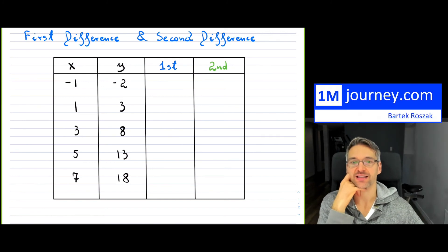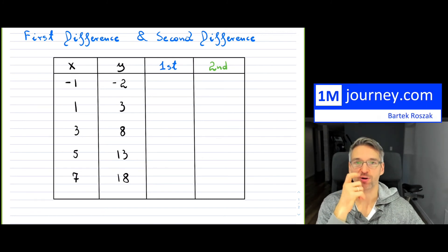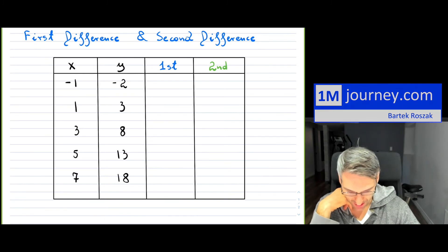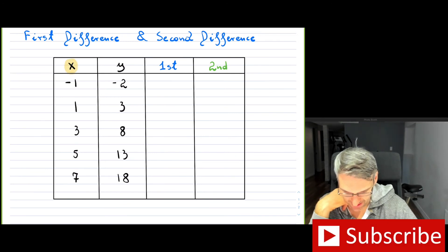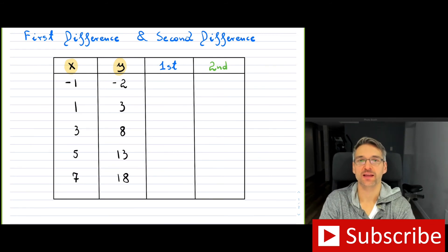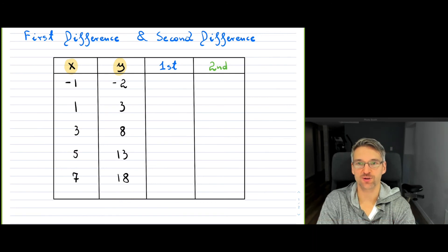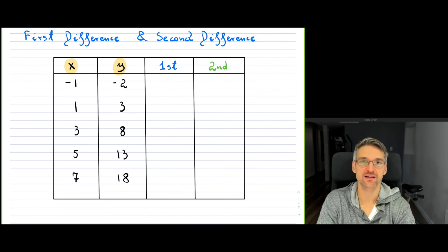Welcome to the video on first and second differences in your dependent variable. Independent variables are drawn on your x-axis and dependent variables are drawn on your y-axis. In this video, I want to explain the simplicity of what the first difference and the second difference are, compare them to the slope, and tell you what you can determine from the first difference.